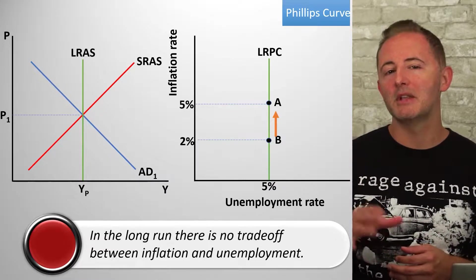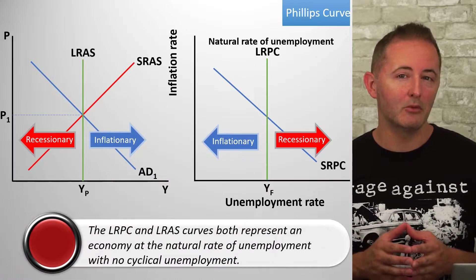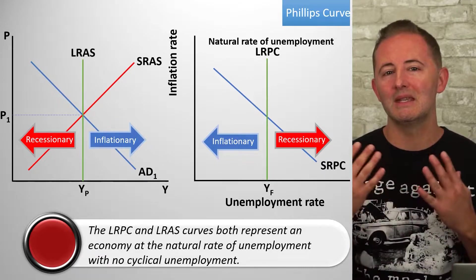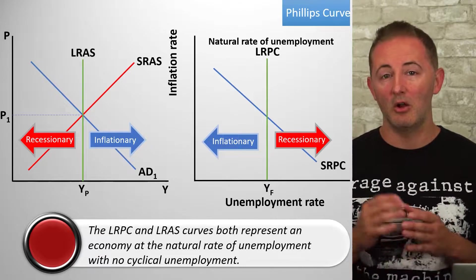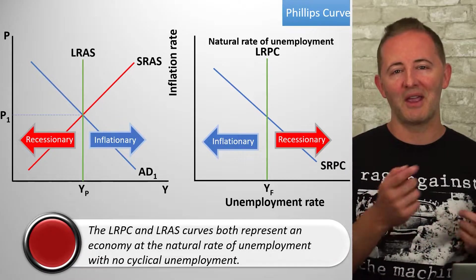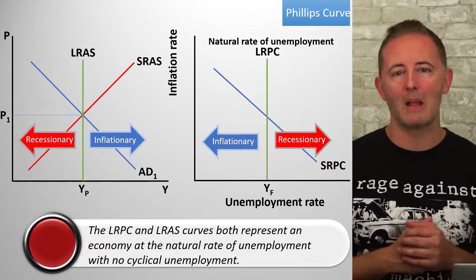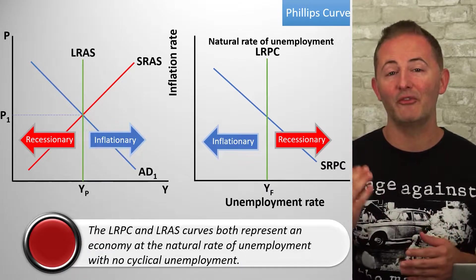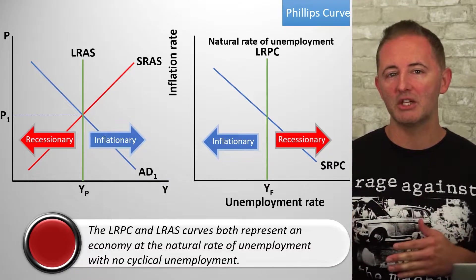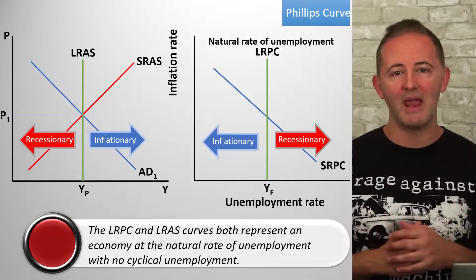The LRPC is located at the natural rate of unemployment, which means there's no cyclical unemployment and the economy is in long-run equilibrium. It also means that when the economy is on its LRPC, it's also on the LRAS curve of the AD-AS model. So if we're anywhere to the left of the LRPC, the economy is in an inflationary gap, while anywhere to the right, it's in a recessionary gap — basically the mirror image of the AD-AS model.